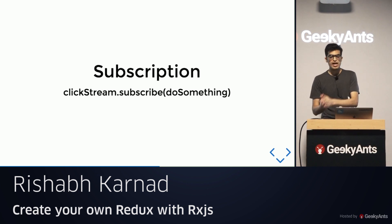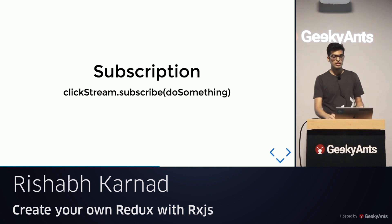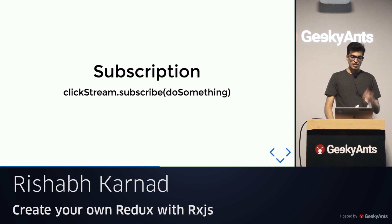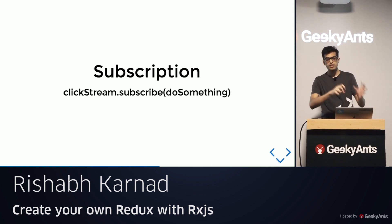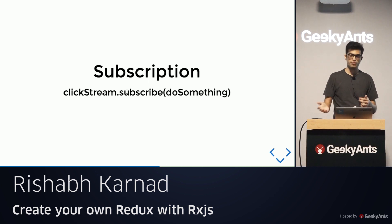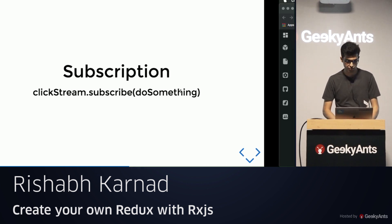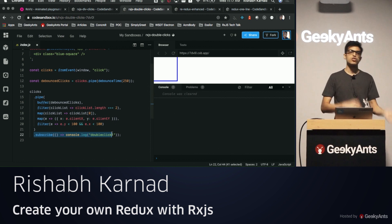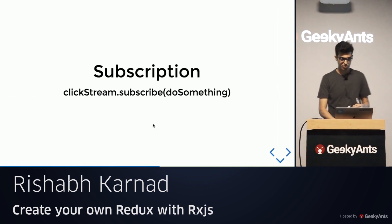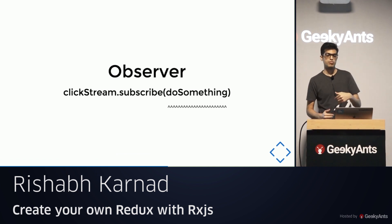Apart from observables and operators, there are a few other key things in RxJS. The first is subscriptions — when you have an observable and the observable generates some value, you want to deal with that. Typically you have a stream which is an observable and you subscribe to it with some function. That function runs whenever the observable generates a value — earlier we were just logging to the console.